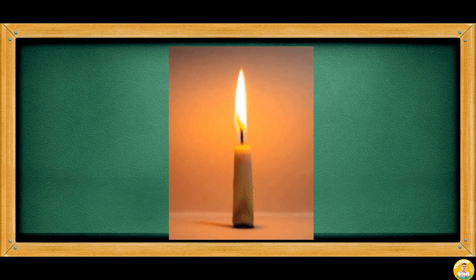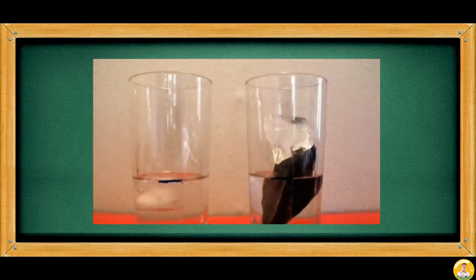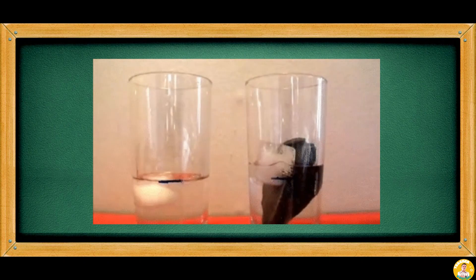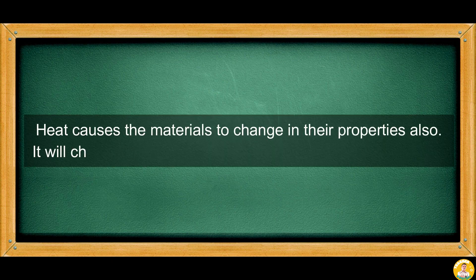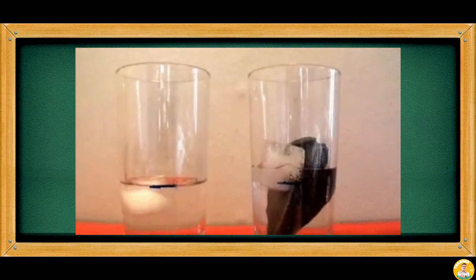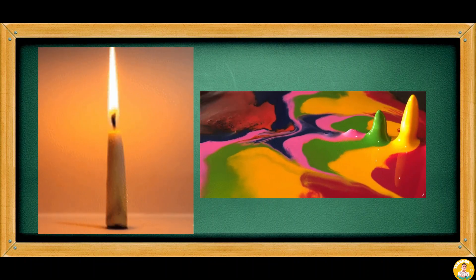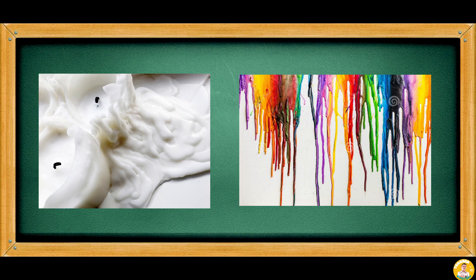Materials also undergo chemical change when heat is applied. Heat causes materials to change in their properties and state — from solid to liquid, which is called melting. When ice cubes melt, the heat present in the environment is absorbed by the ice cubes. When heat was absorbed by the lighted candle and crayon, they changed state from liquid to solid. This is caused by the process of cooling.